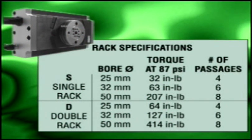Either single or double rack configurations deliver torque values ranging from 32 to 414 inch-pounds when pressurized at 87 psi.